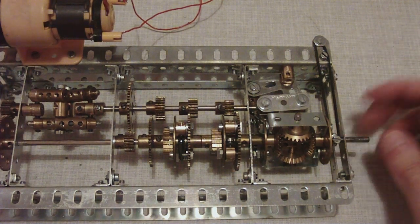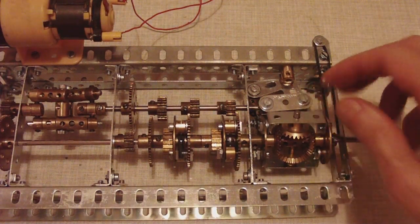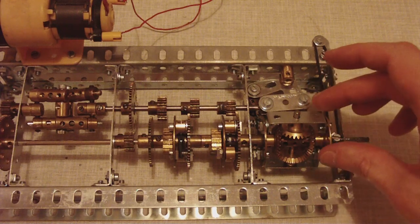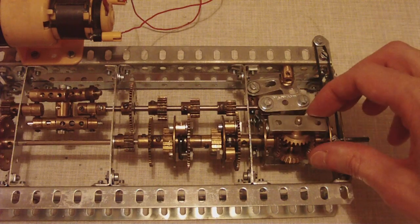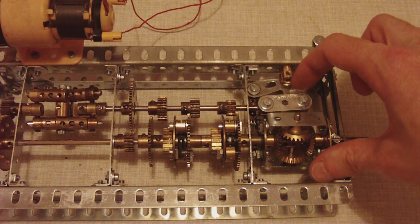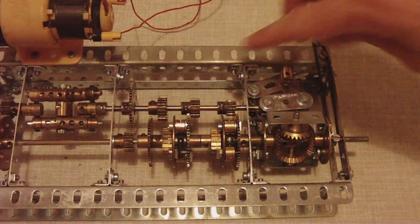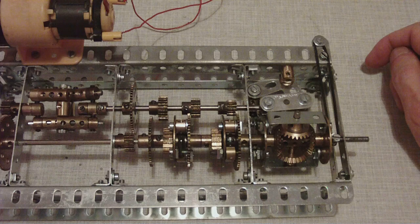When you put load on this shaft this differential here tries to turn and it's linked up to this linkage here which pulls the shaft back to the right, back down into a lower gear.